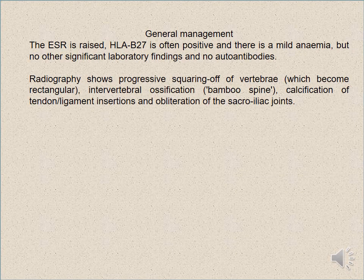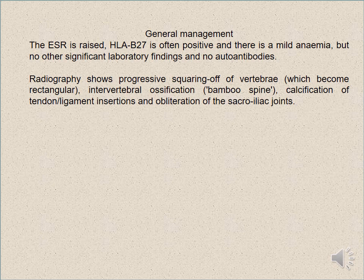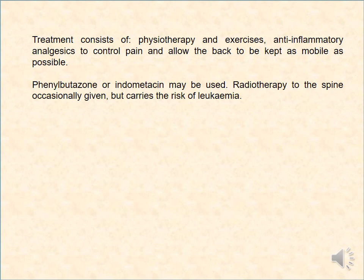About 25% of patients develop eye lesions — uveitis or iridocyclitis. About 10% develop cardiac disease such as aortic incompetence or conduction defects. Diagnosis depends on the ESR, which is raised, and HLA-B27, which is positive. There is mild anaemia but no other significant laboratory finding and no autoantibodies. Radiography shows progressive squaring-off of vertebrae, which become rectangular, intravertebral ossification, bamboo spine, ossification of tendon and ligament insertions, and obliteration of the sacroiliac joint.